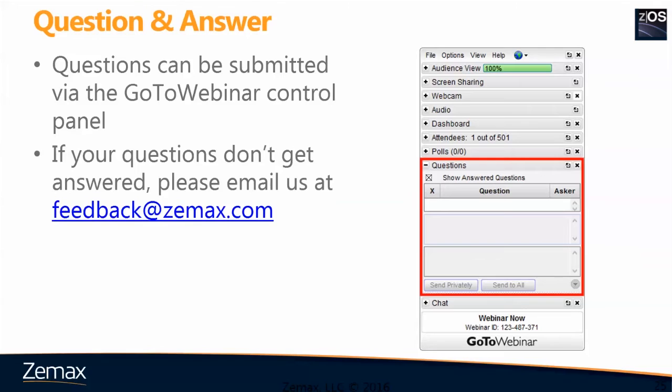Here's a more specific question: suggestions for lens systems for OCT imaging with a working distance of around 300 millimeters, minimizing aberration and field curvature. For OCT, your NA is usually not large, so a simple doublet would likely be sufficient.